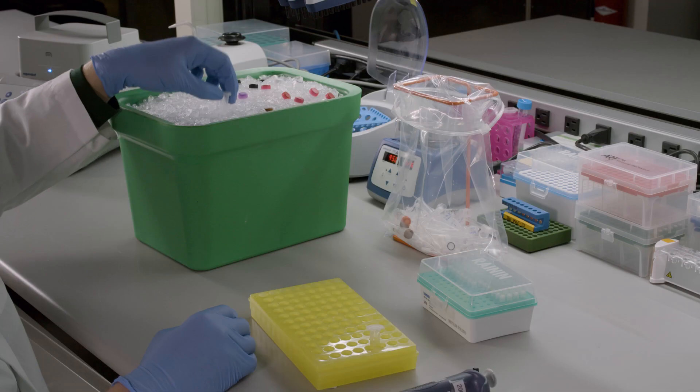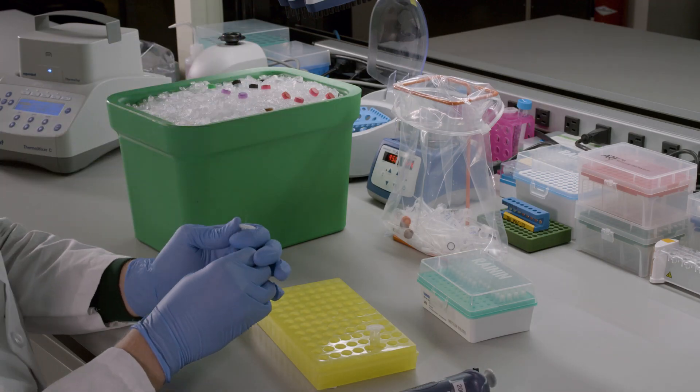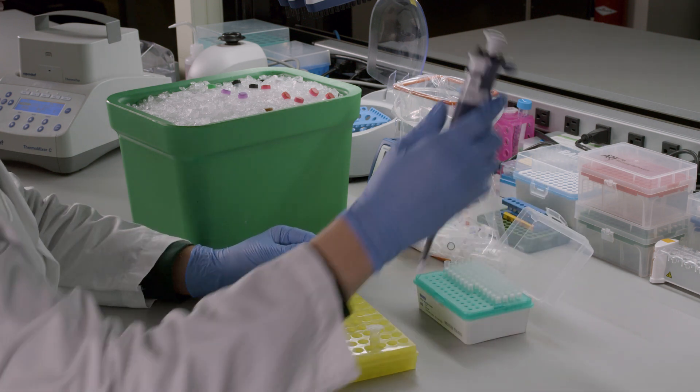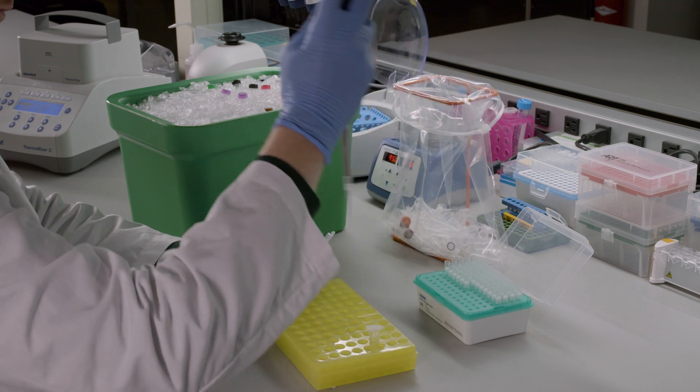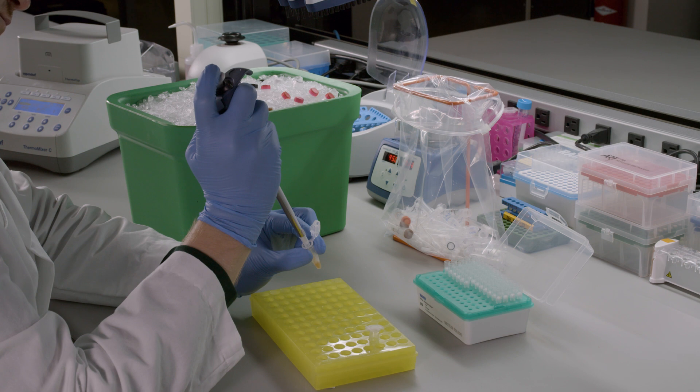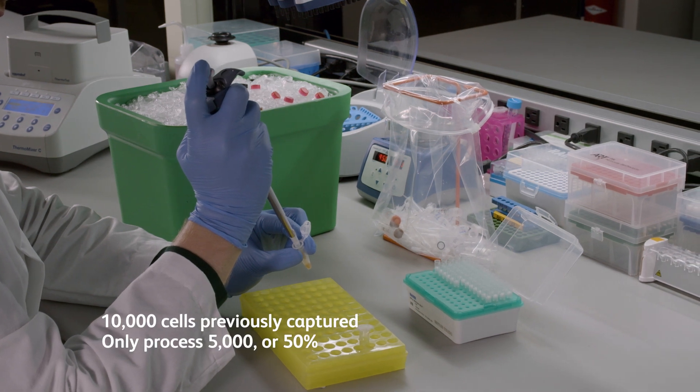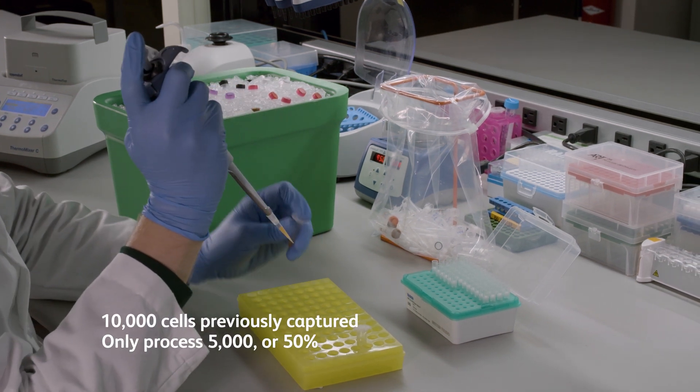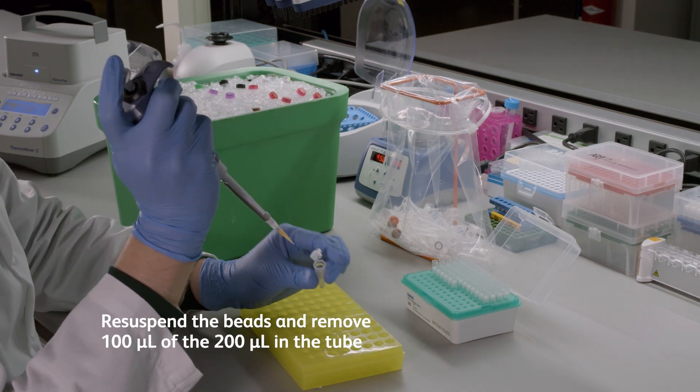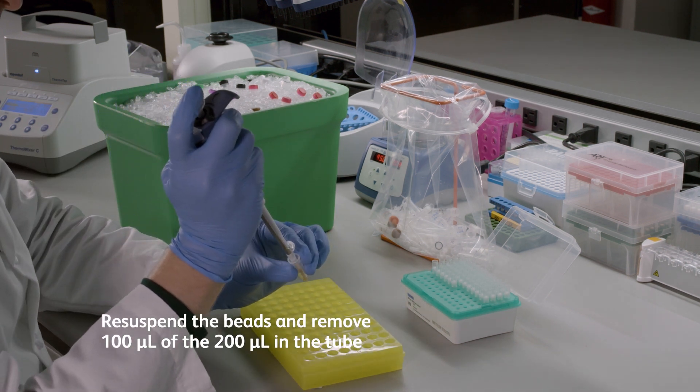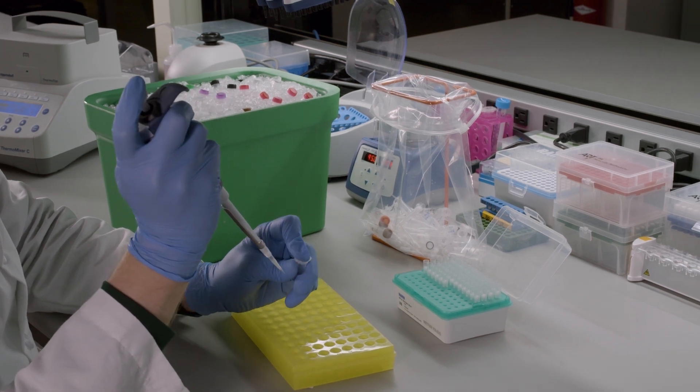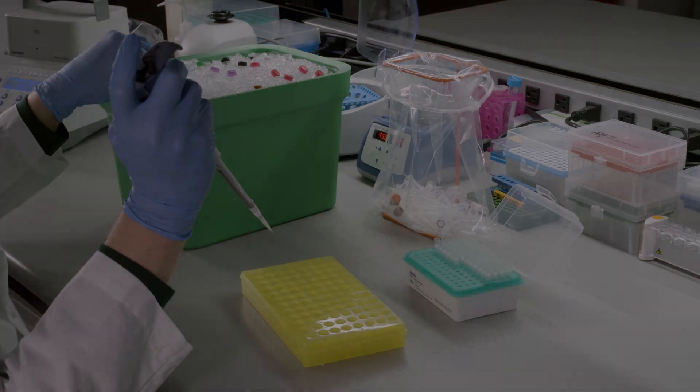We'll be starting with the exonuclease treated beads from the cDNA protocol. If you wish to subsample for future use, you can calculate the volume of beads to remove as a proportion of the cells captured. In our example, we previously captured 10,000 cells but only want to process 5,000 or 50% of them. To do this, resuspend the beads and take 100 microliters of the 200 microliters in the tube. The remaining beads can be stored at 4 degrees Celsius for up to 3 months.